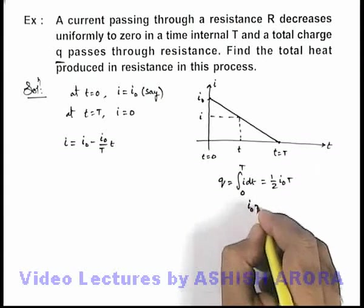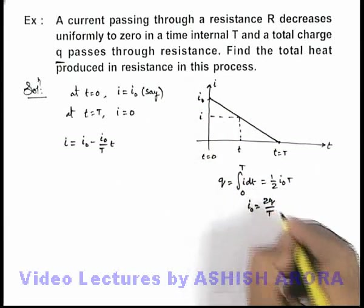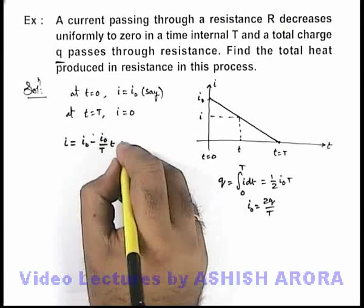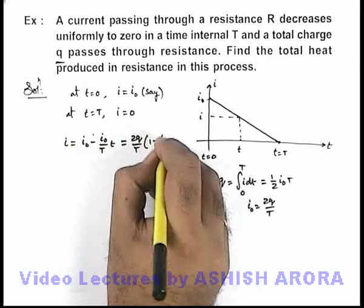From this relation, we are getting the value of initial current i_0, which can be written as 2q by T. So we can substitute it here—the value of current we are getting is (2q/T)(1 - t/T).